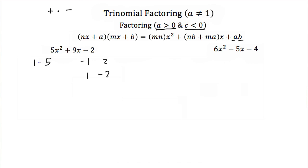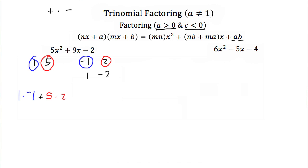Now I need to find combinations of these numbers that will multiply and add to get us 9. First, I'm going to try 1 times negative 1 and 5 times 2. If I do that, I'll have 1 times negative 1 plus 5 times 2. Well, 5 times 2 is 10 and 1 times negative 1 would be negative 1. If we add those together, we get 9, which is exactly what we were looking for.